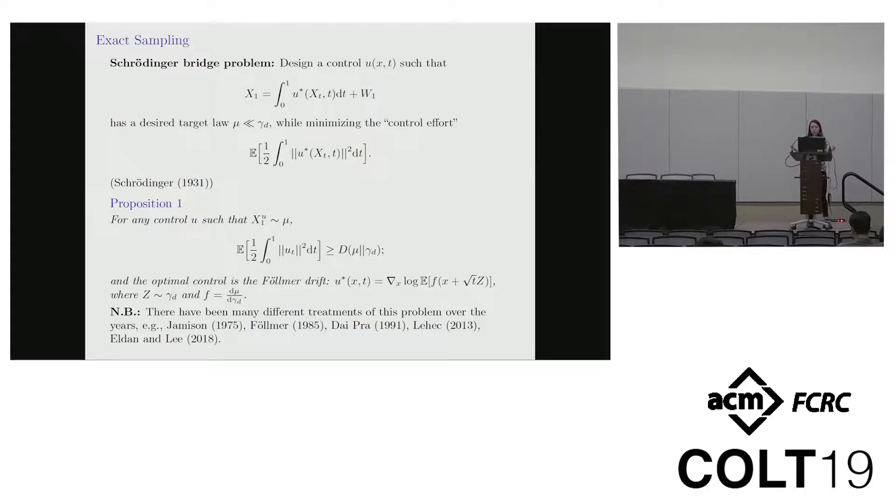Our control theoretic view lets us formulate this problem in the variational way that we've just discussed to say that any control that achieves that terminal distribution that you desire will have a control cost that is lower bounded by the divergence between the terminal, your target, and initial Gaussian measures. And moreover, the optimal control is this thing called the Föllmer drift. So grad log of that expectation you see over there, which we'll call Q_tf in what follows for the heat semigroup. And you can get this by subbing in the target density f for the control cost in what we had before.